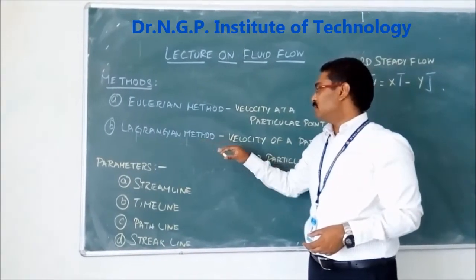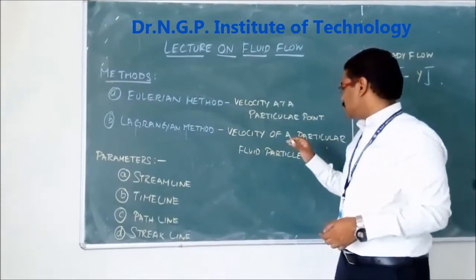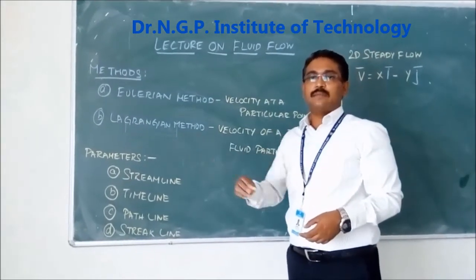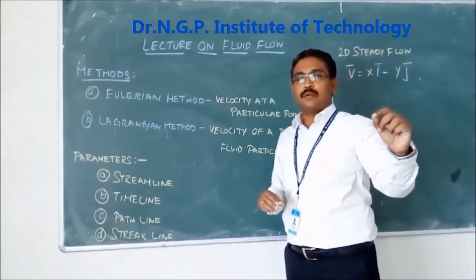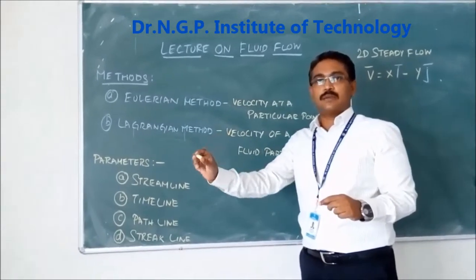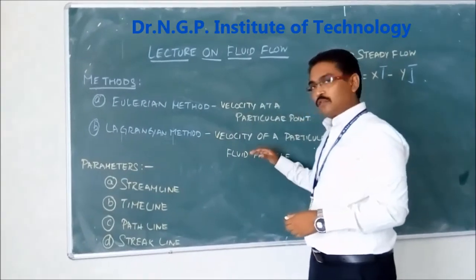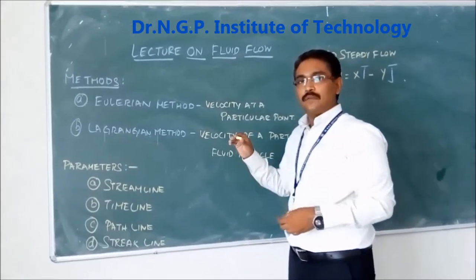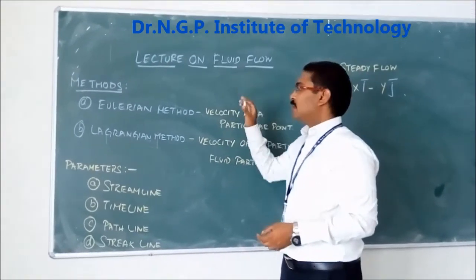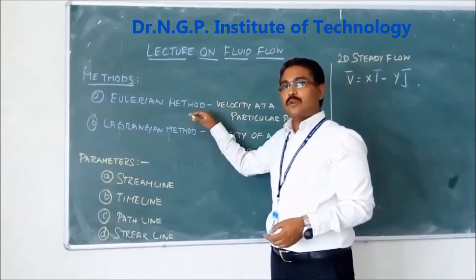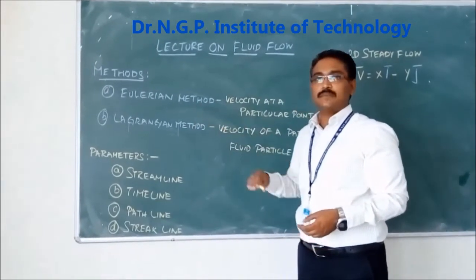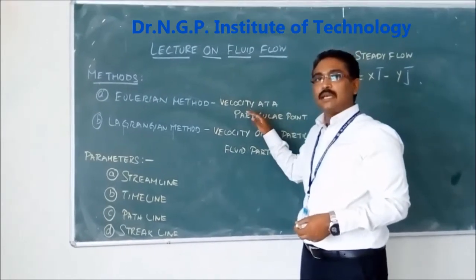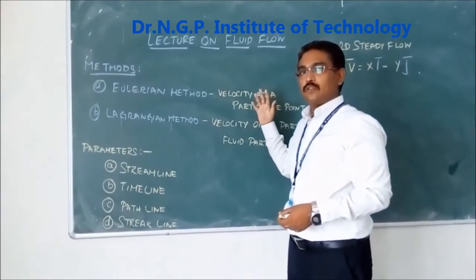The Lagrangian method, on the other hand, tracks the velocity of a particular fluid particle — for example, what happens to a particle at position one and what is its velocity at position two. When discussing fluid flow in general, we predominantly follow the Eulerian method, focusing on velocity at a particular point.